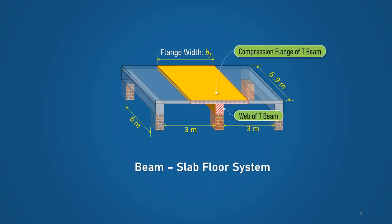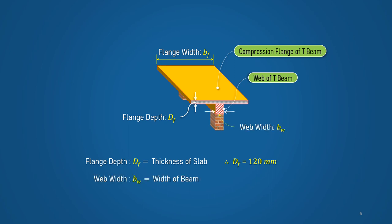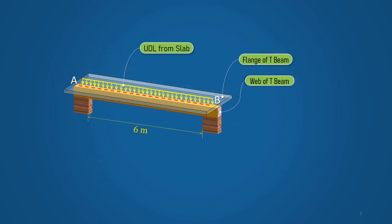The slab forms the compression flange of the T-Beam while the rectangular section forms the web width of the T-Beam. The slab thickness is taken as the thickness of the compression flange, and the beam width is considered as the web width. The total depth of the T-Beam is considered from the top face of the slab to the bottom face of the beam. The T-Beam takes uniformly distributed load from the slab and bends over the span AB.